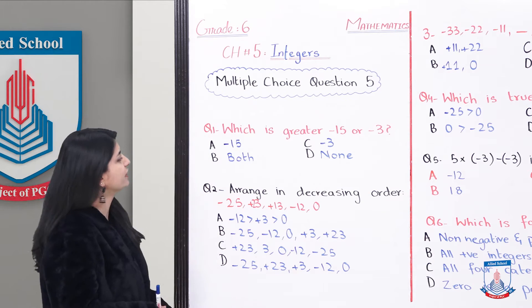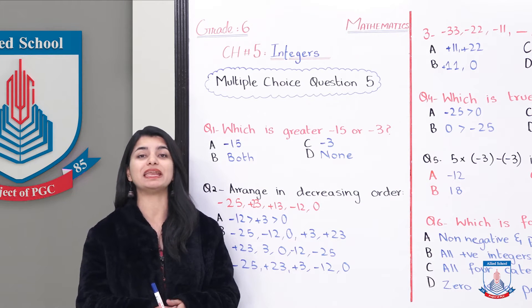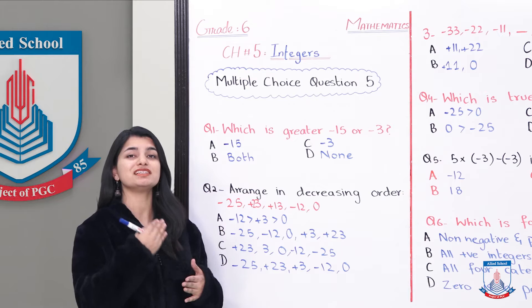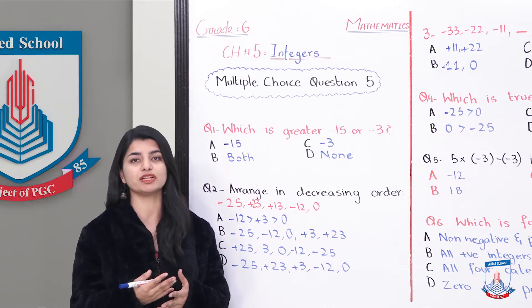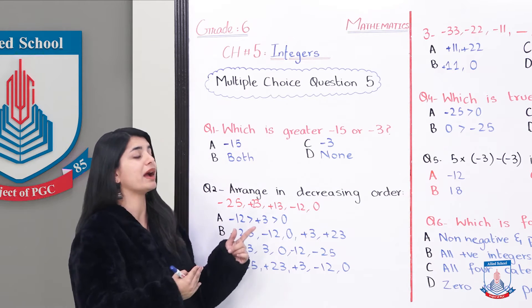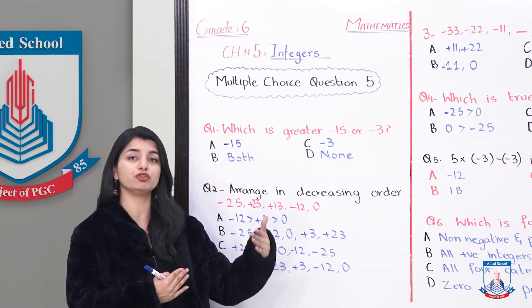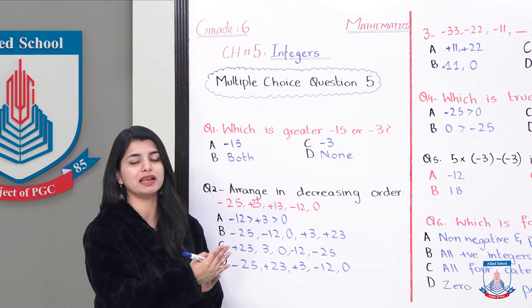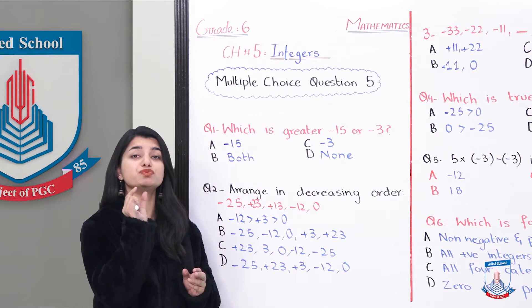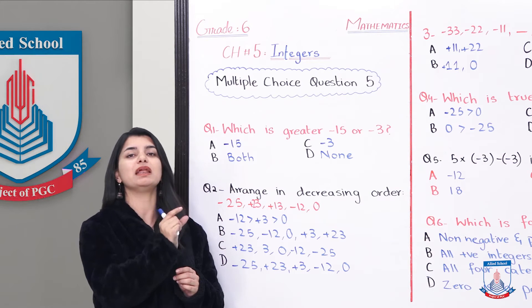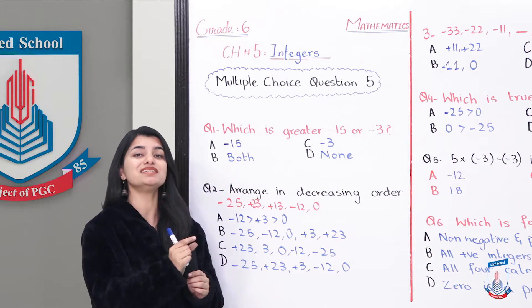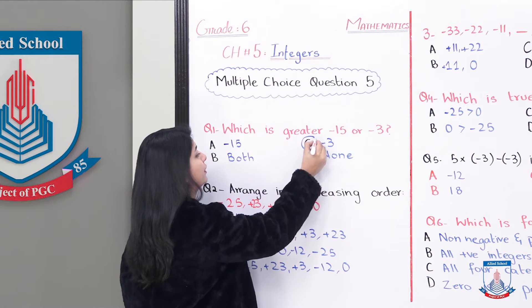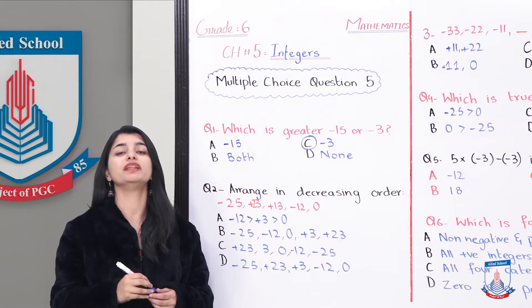The first MCQ is which is greater, minus 15 or minus 3? Now we know that as you go to the right side of the number line, you go closer to 0. Minus 15 is to the left side of the number line, then you go to minus 3, minus 2, minus 1 and then 0. The rule is that the negative number which is smaller when written with a negative sign is actually greater. So because minus 3 is to the right side of minus 15 on the number line, minus 3 is our bigger number. This is the correct option.